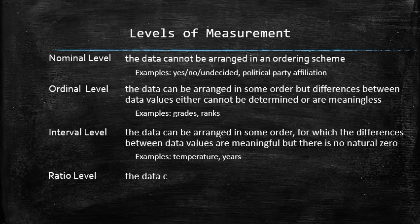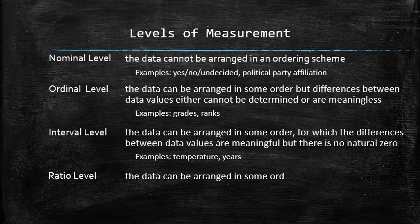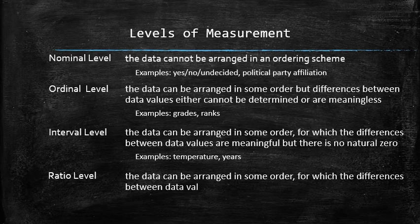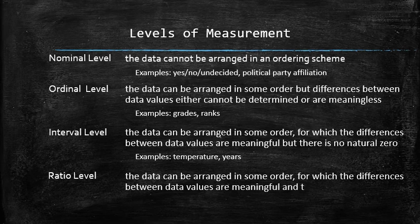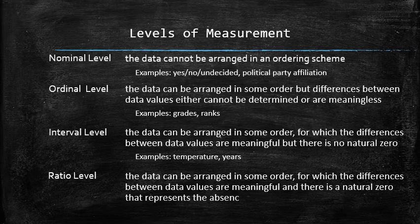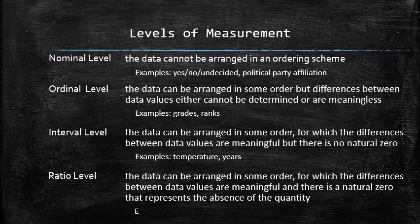The ratio level is when the data can be arranged in some order for which the differences between data values are meaningful, and there is a natural zero that represents the absence of the quantity. For example, distances and prices.